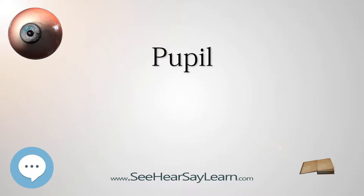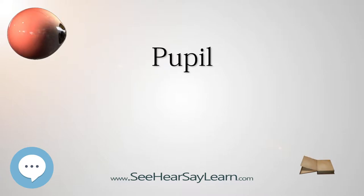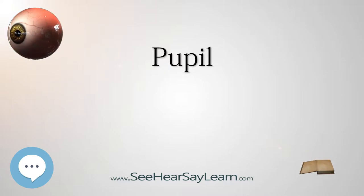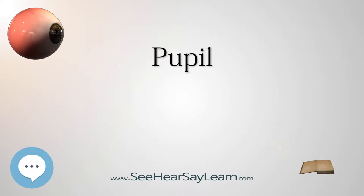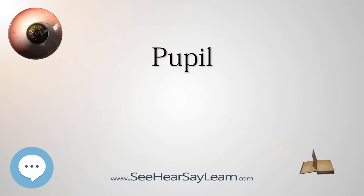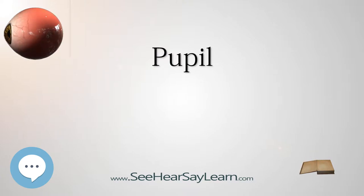An anomaly of etymology is that in a surprising number of unrelated languages the meaning of the term for pupil is 'little person.' This may be due to the fact that the reflection of one's image in the pupil is a minuscule version of one's self.